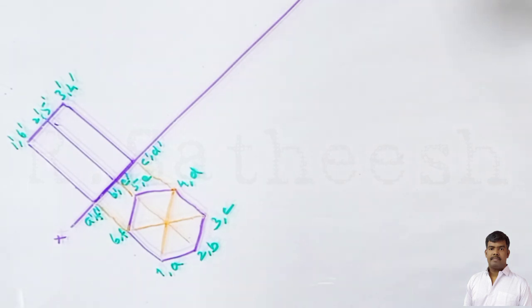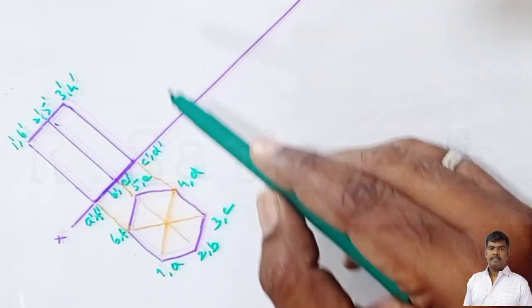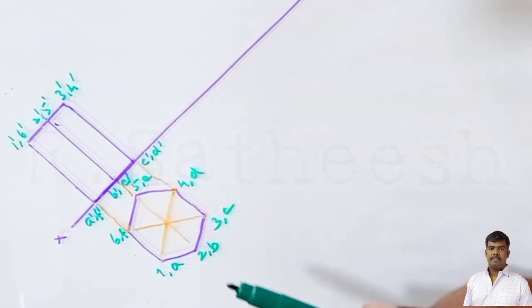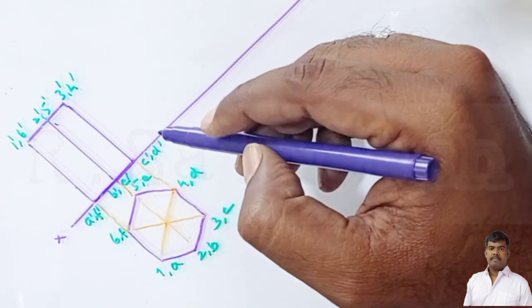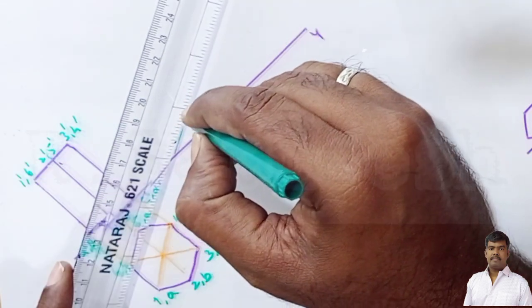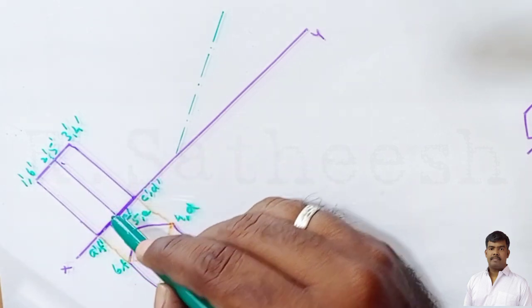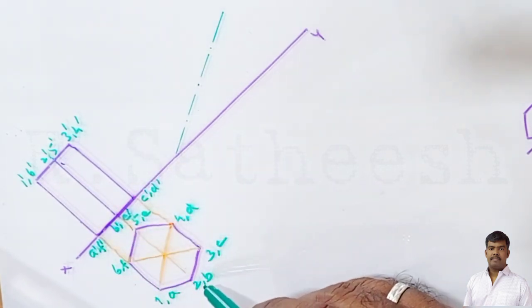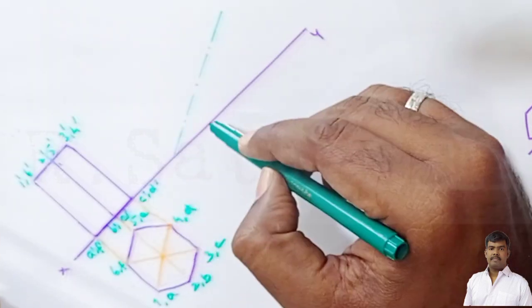This is the solid before tilting. Now the solid is inclined — at the time of inclination, one base edge rests on HP. The base edges are a, b, c, d, e, f. While tilting, the base edge c-d lies on HP. The axis is inclined at 30 degrees, so draw the 30-degree axis line. Since the axis and base are at right angles, if the axis is 30 degrees, the base is at 60 degrees.